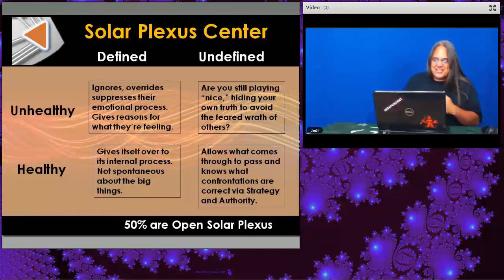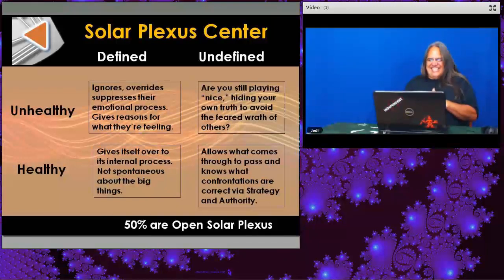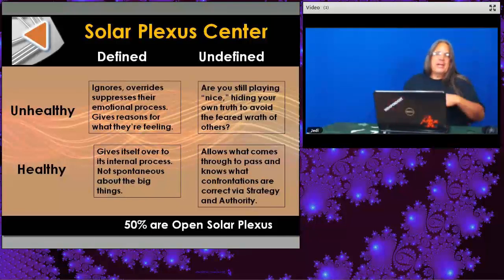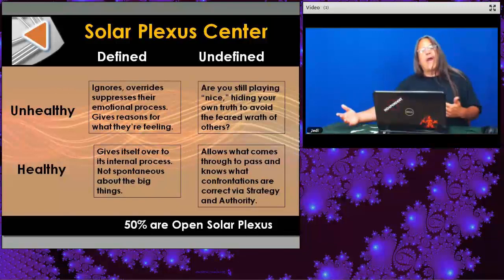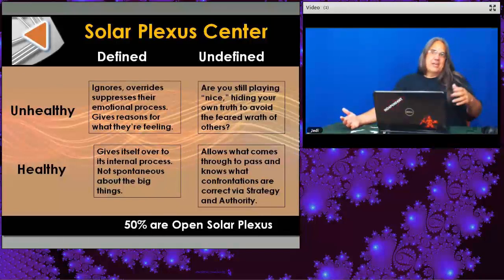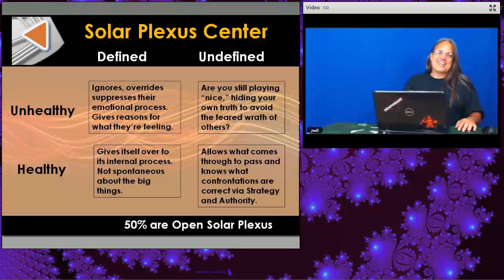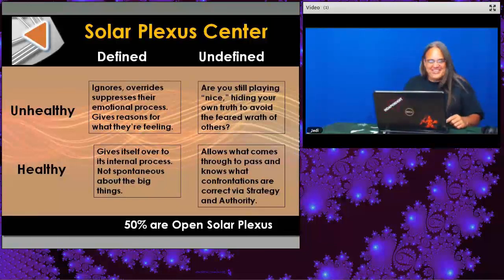Allows what comes through to pass, and knows what confrontations are correct via strategy and authority. At some level we're learning to let it pass through. If that's not fully achievable, I'm at least aware of what I'm doing. I'm not avoiding the big things I need to confront — the little things, whatever. Unless my mom calls. There's kryptonite for me too, guys — it comes in the form of my mom. The one person that can still push every button I have.